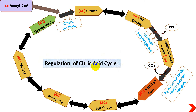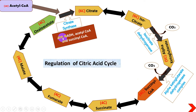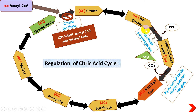The citric acid cycle is strictly regulated, especially by three enzymes: citrate synthase, isocitrate dehydrogenase, and alpha-ketoglutarate dehydrogenase complex. Citrate synthase is negatively regulated — inhibited — by high concentrations of ATP, NADH, acetyl-CoA, and succinyl-CoA. When ATP and NADH levels are high, citrate synthase is inhibited and the cycle is halted. Conversely, high ADP levels promote isocitrate dehydrogenase activity, driving the cycle forward.